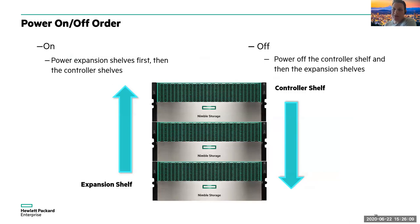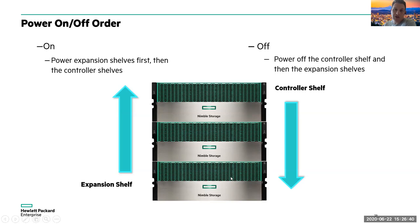It's important to follow the correct power sequencing when you have expansion shelves. When powering on, make sure all expansion shelf disks are powered on first, then turn on the controller — that way the controller can discover all disks as it comes online. When powering off, do the exact opposite: power off the controller first, then power off the expansion shelves. You never want to pull drives while the controller is still writing data.